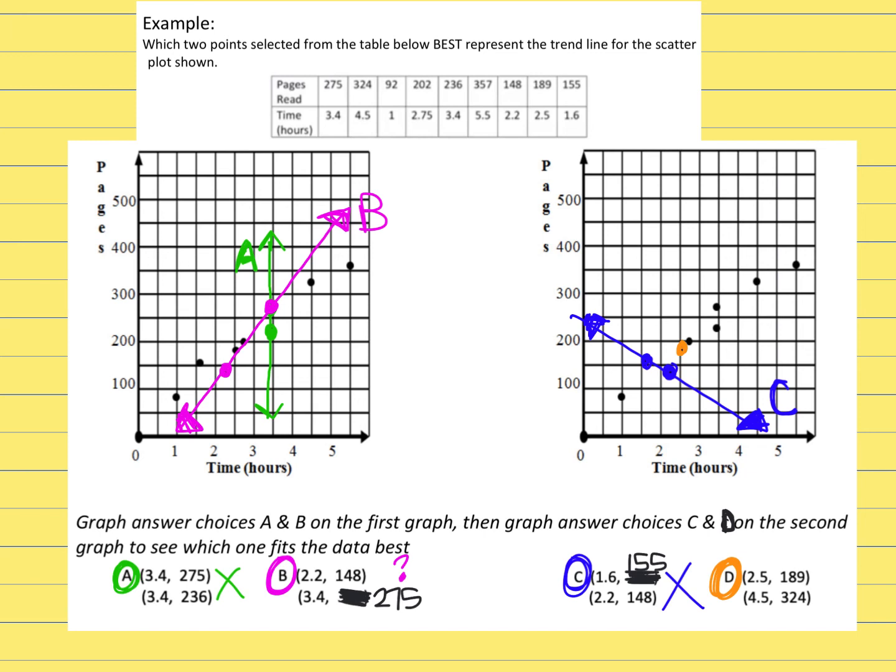Then the second point to make the line is 4.5 and 324. If you go over 4.5, then up 324 would be right here. I'm going to color that one orange.